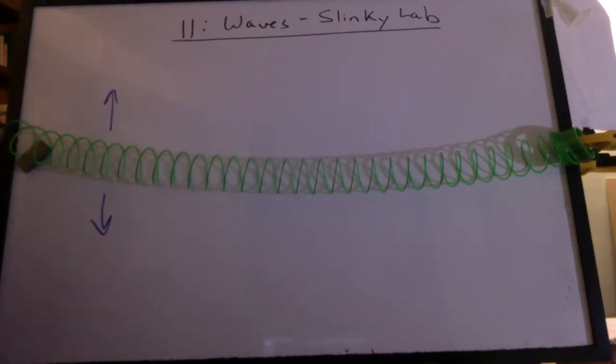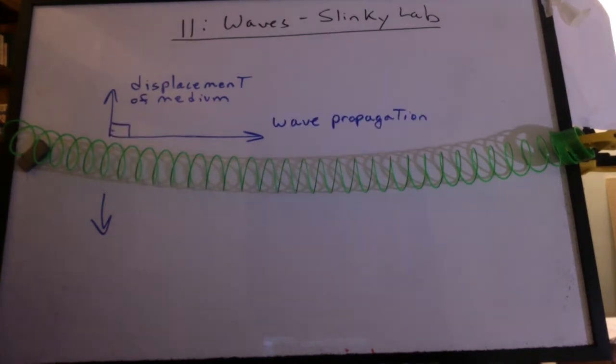The disturbance you made was up and down, but the wave traveled to the right. In this example, we say the displacement of the medium is perpendicular to the direction of the wave propagation. This is what we call a transverse wave.